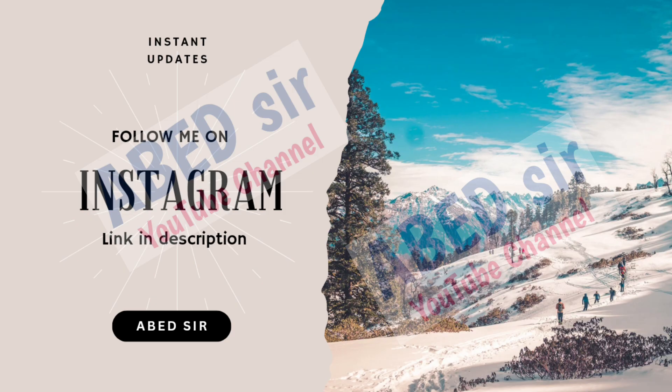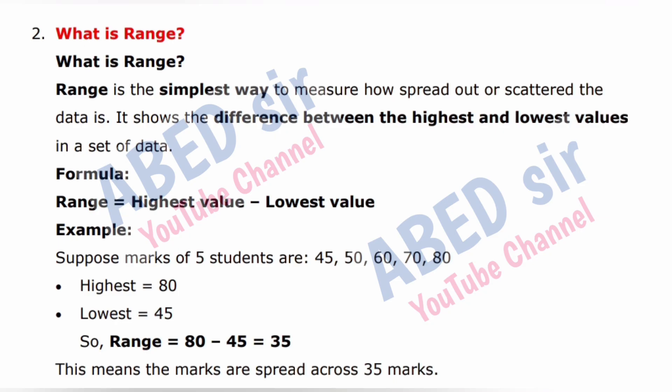Next important short question 2: What is range? Range is the simplest way to measure how spread out or scattered the data is. It shows the difference between the highest and lowest values in a set of data. Formula: Range = Highest value − Lowest value. Example: Marks of 5 students are 45, 50, 60, 70, 80. Highest = 80, Lowest = 45. So range = 80 − 45 = 35. This means the marks are spread across 35 marks.